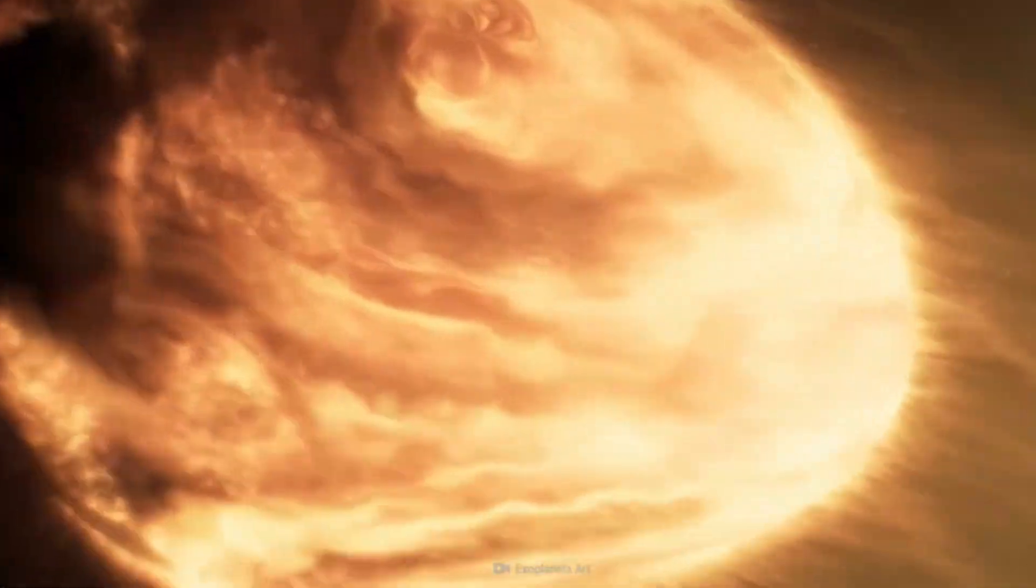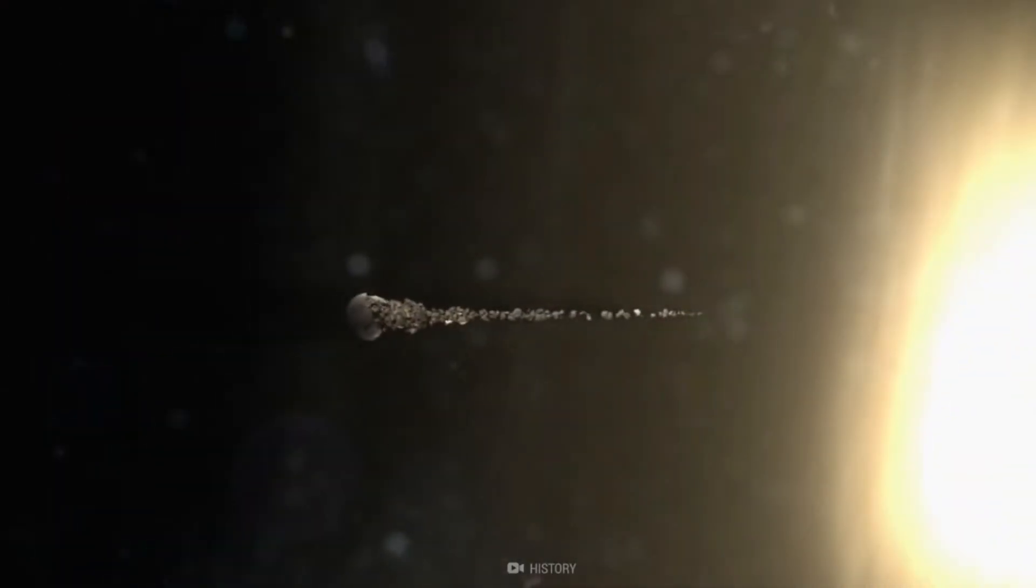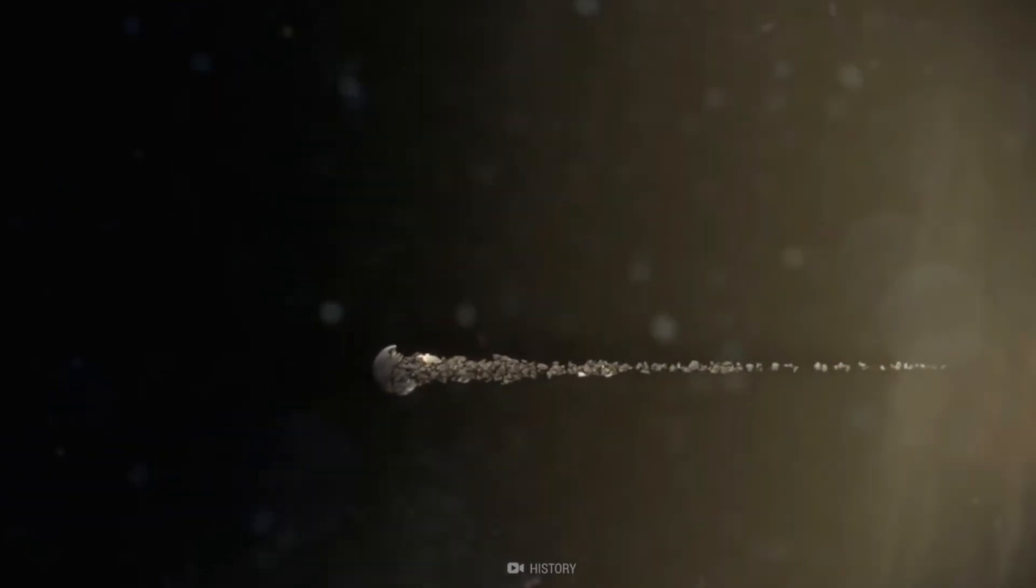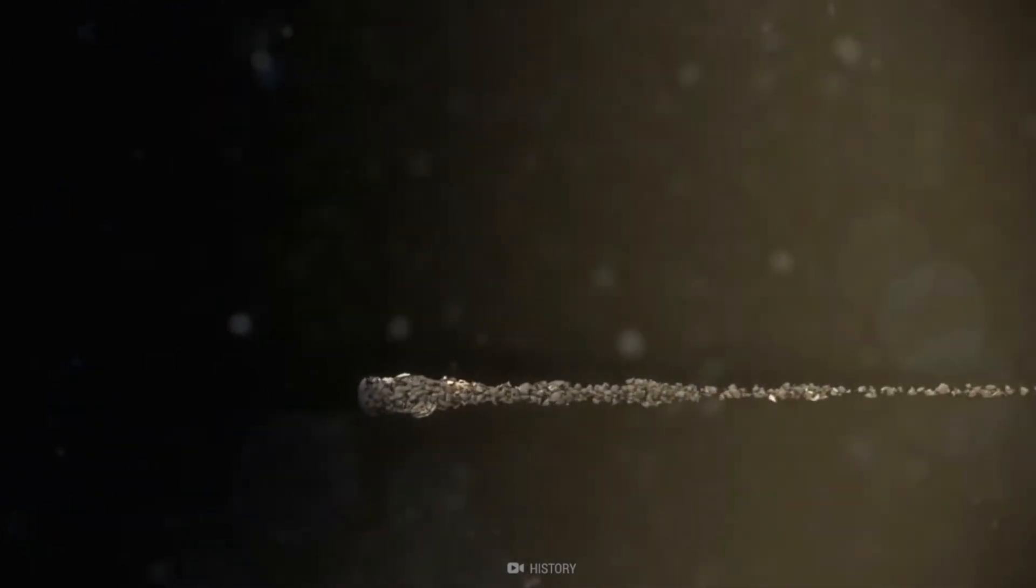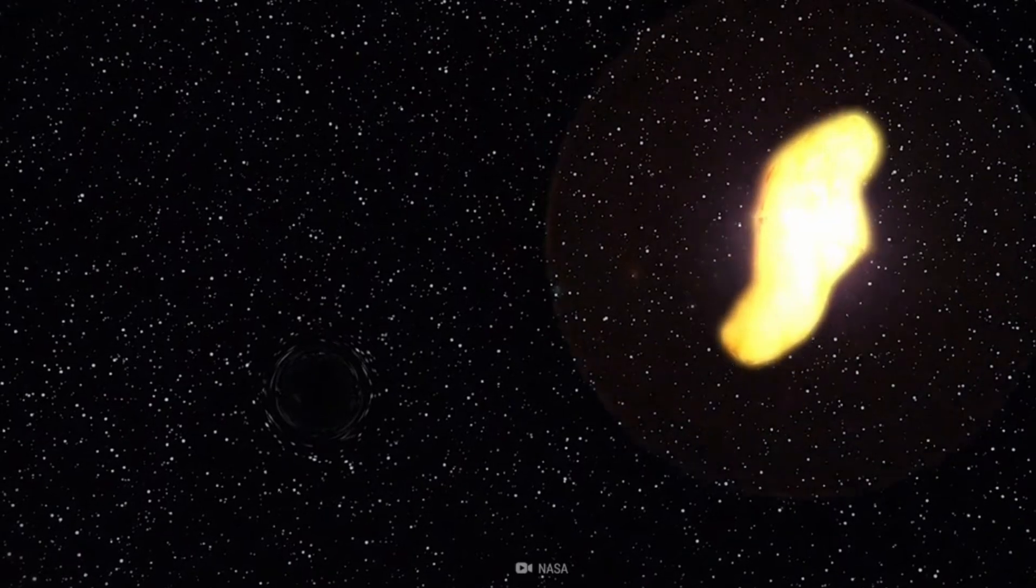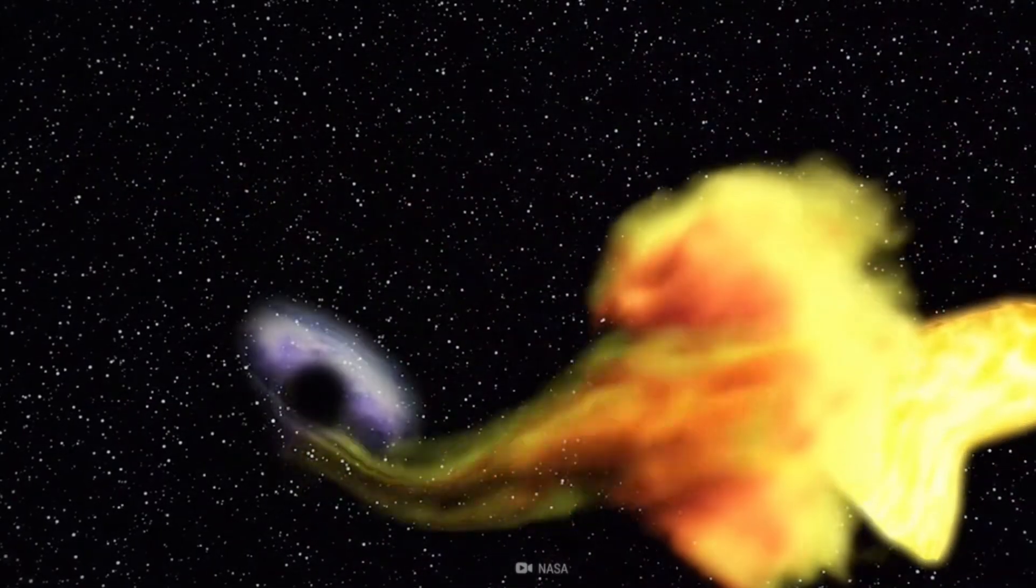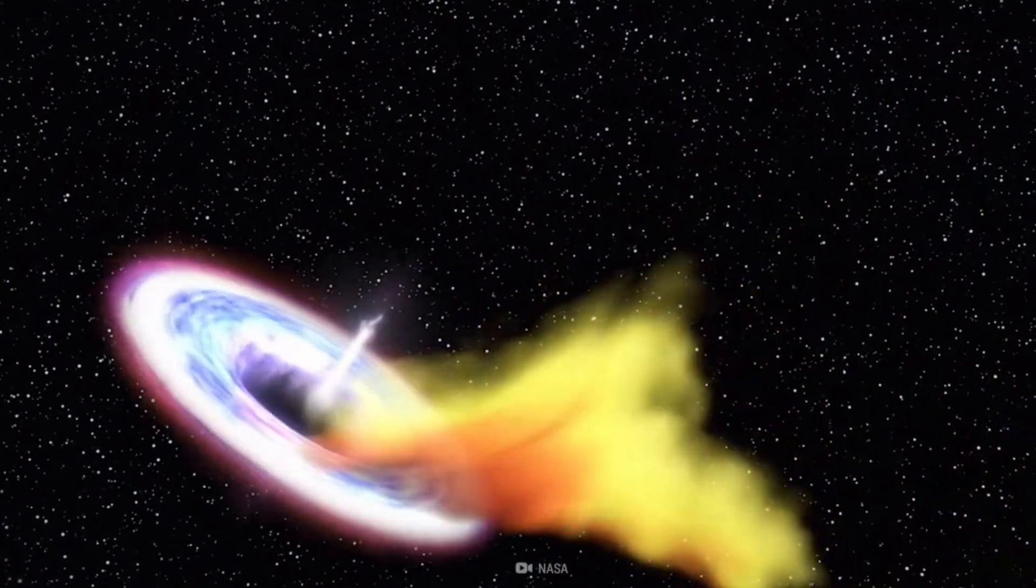With one final gulp, the black hole would consume the Sun, and Ton 618 would now dominate the center of our former solar system, its reach extending nearly to where the Oort Cloud once was. But it wouldn't stop there.